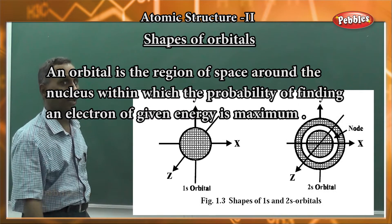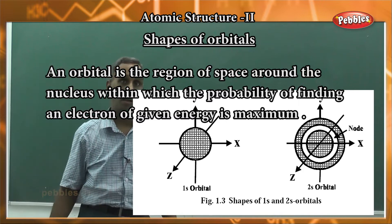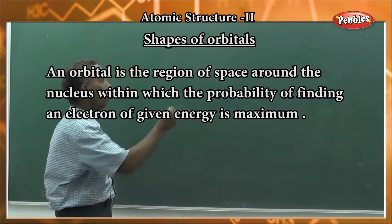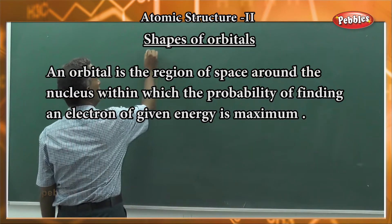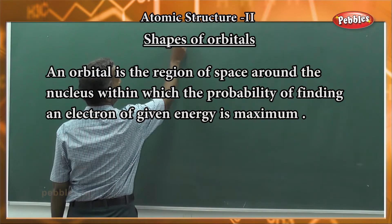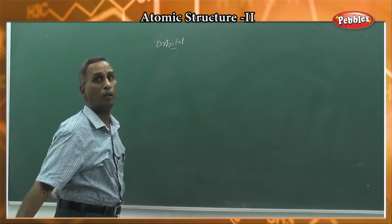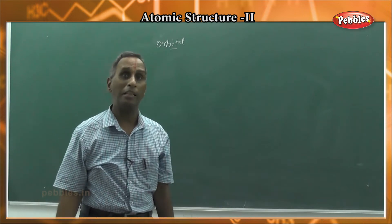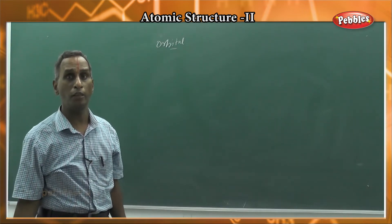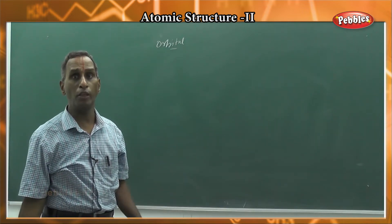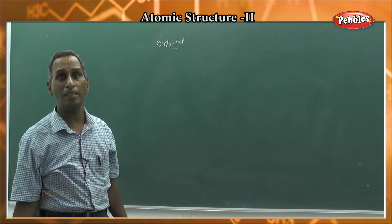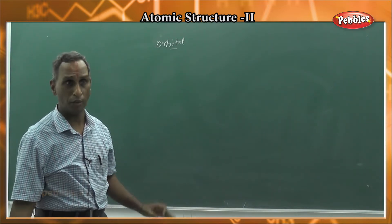Today we will see the aspects on the shapes of orbitals, orbital order and shape. What is meant by orbital? The term orbital is defined as the region of space around which the probability of finding the electron is maximum. That is one definition.